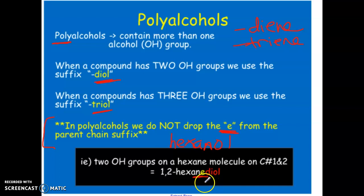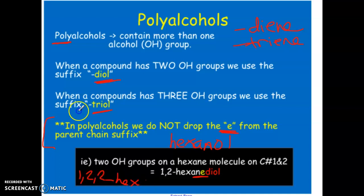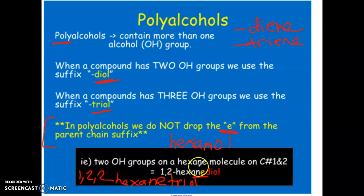If we had one OH on carbon one and two on carbon two, we'd say 1,2,2-hexanetriol. Just be mindful when looking at multiple alcohols — don't drop the 'e' from the name.